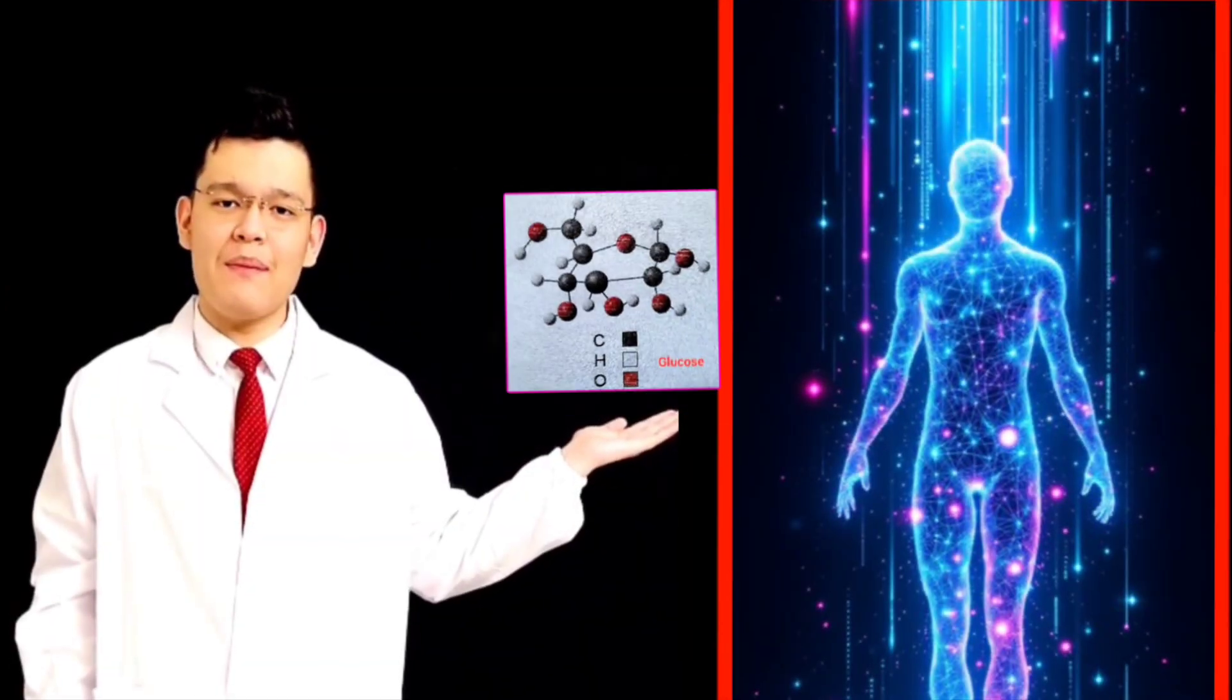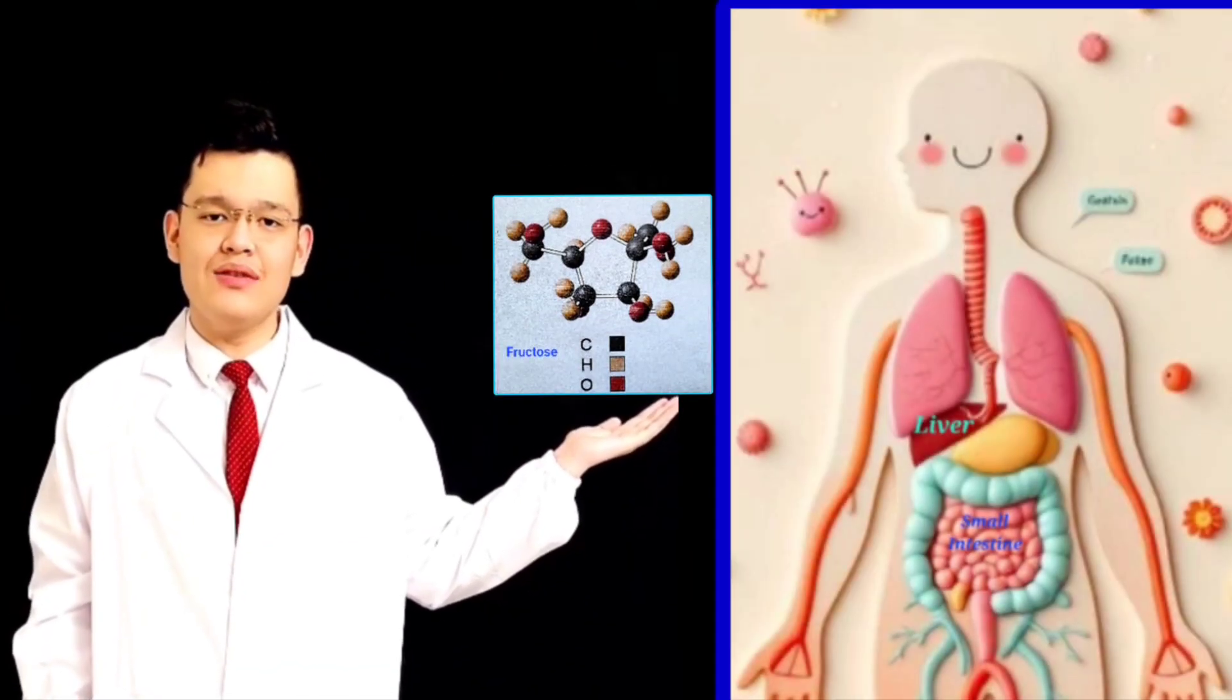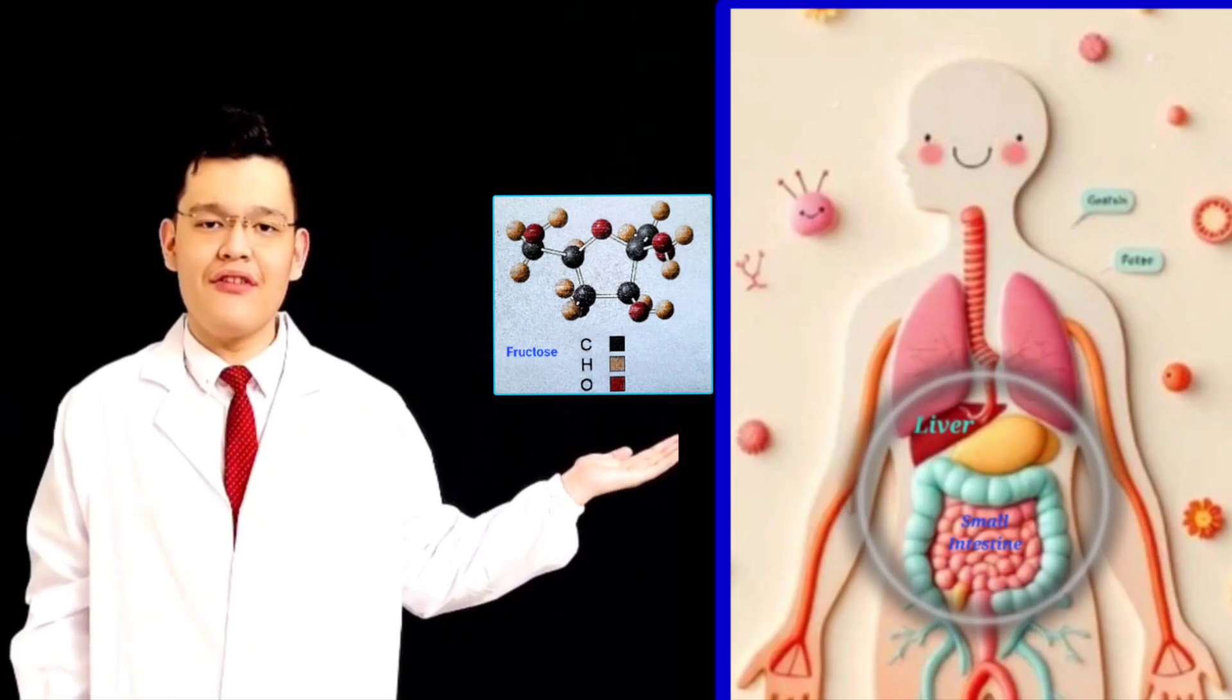Glucose is metabolized throughout the body, while fructose is primarily metabolized in two specific locations: the liver and the small intestine.